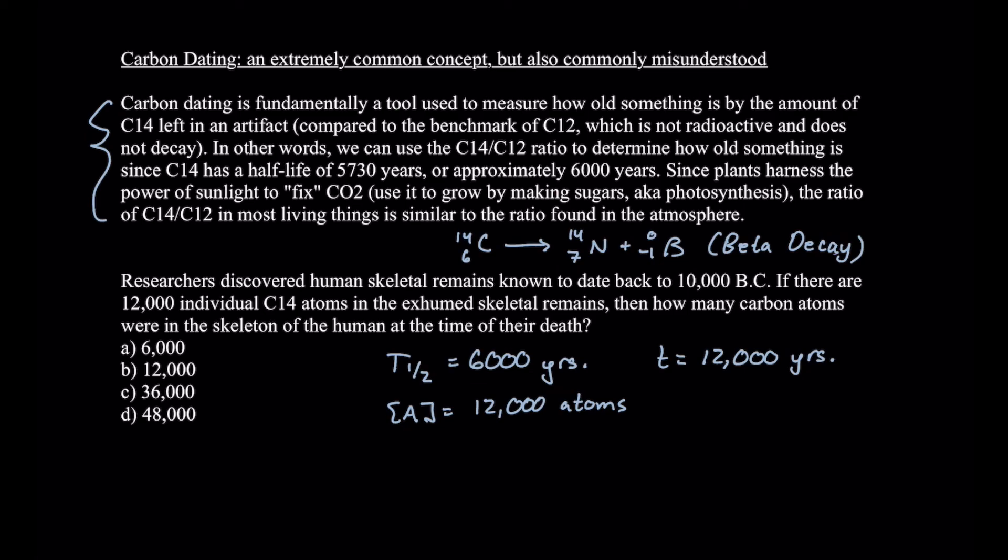Now we could plug this into an equation. However, I think it makes more sense to use our common sense. So if 12,000 years have passed, and a half-life occurs every 6000 years, that means that two half-lives have occurred. So two half-lives.